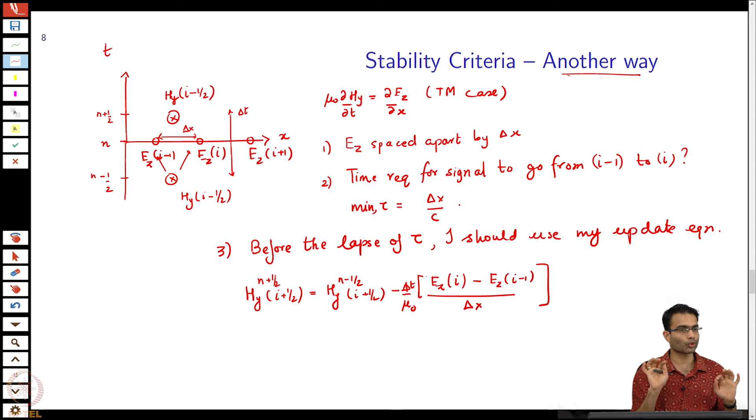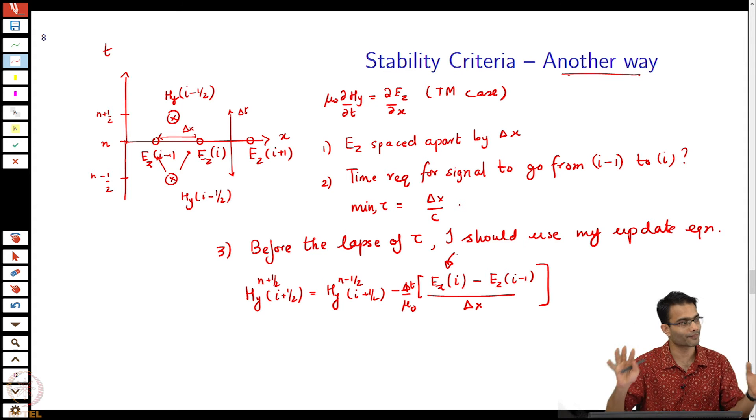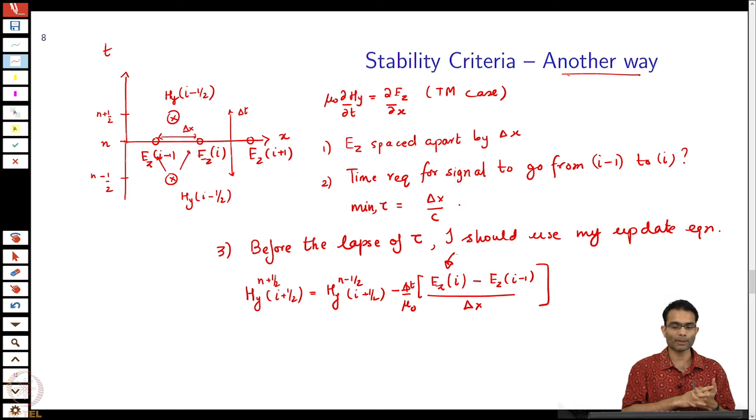Before this period of interval tau goes, I should use my update equation. Why? Because if I do not use this update equation, then this guy over here Ez i would have got a new value. I am using the update equation, but the value inside it is wrong. I would be using the past value of Ez over there. I do not want to do that. Before the wave has physically gone, I want to quickly use my update equations while my variables are still faithful to the physics.